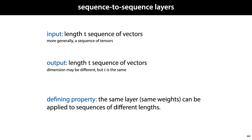The defining property of a sequence-to-sequence layer is that they can consume sequences of different lengths with the same set of weights. In one iteration of gradient descent, we can feed the layer a sequence of five words, get a loss and update its weights. And in the next iteration, we can feed it a sequence of 15 words, and get a loss and get a gradient on the same set of weights.